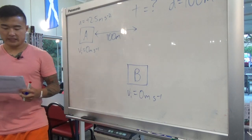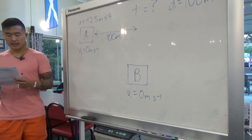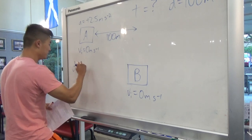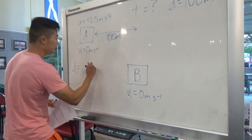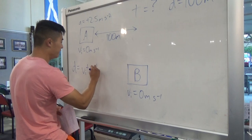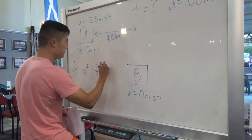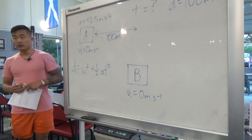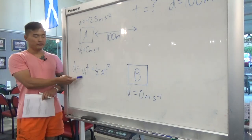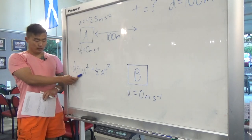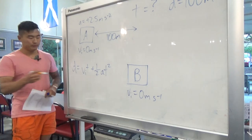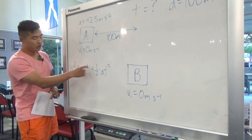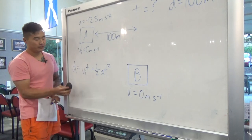We are going to use this equation: distance equals initial velocity multiplied by time, plus half multiplied by acceleration multiplied by time squared. We know that the initial velocity is zero, and anything multiplied by zero is zero, so this whole term is just zero and we can take it out of the equation.